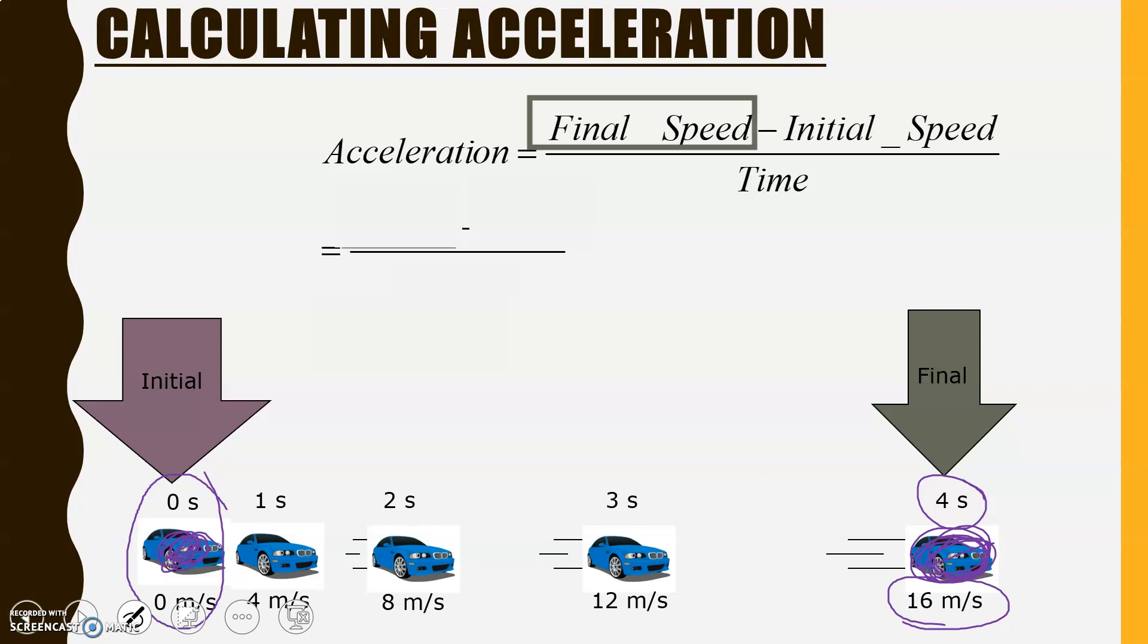So, let's look at our final speed. Well, our final speed was 16 meters per second. Our initial speed was zero meters per second. And our time was from zero to four seconds. So, overall, it was a total of four seconds.